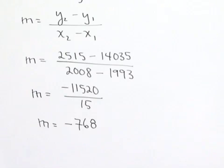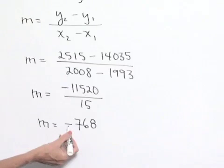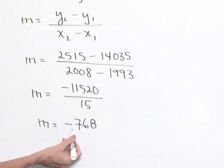Our M value is a negative 768. And what this indicates is that, on average, we have a decrease in the number of escapees of 768 per year.